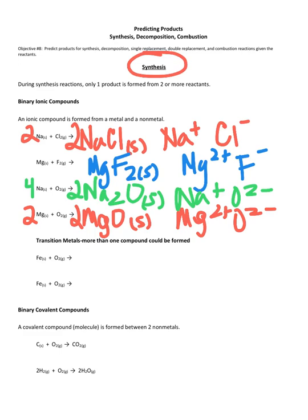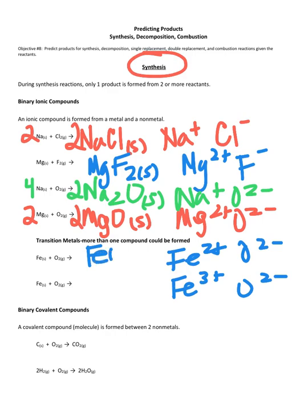Most common charges for iron are a plus 2 and a plus 3. And if they're combined with oxygen, which is a negative 2, we get two different chemical formulas for products. So FeO and Fe2O3. And then you just have to balance those equations.